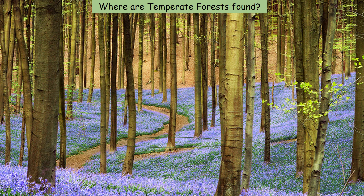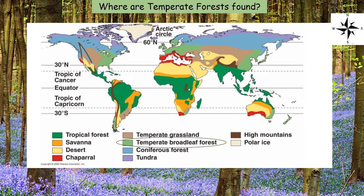We are now going to look at temperate forests and hot deserts. Temperate forests are shown in pale green on the map. In the northern hemisphere they're found just south of coniferous or boreal forests and just north of the Mediterranean biome, also called chaparral. It's the second largest biome in the world. They're found approximately between 25 and 50 degrees north and south of the equator.